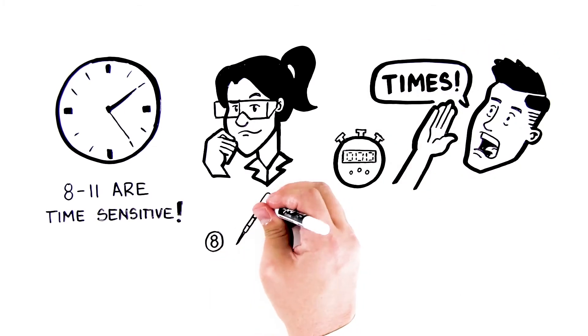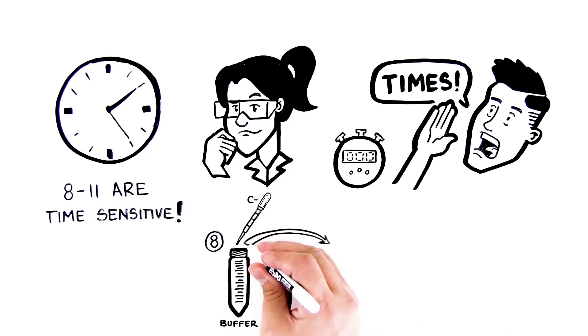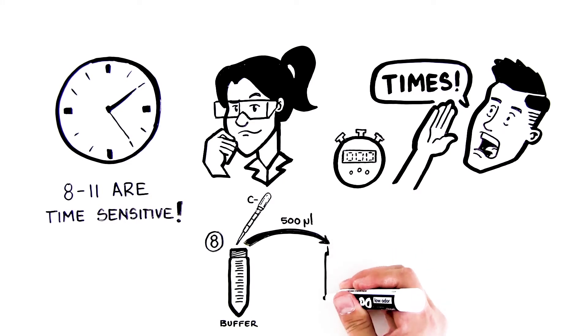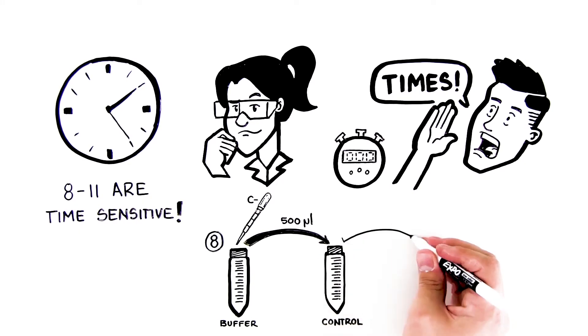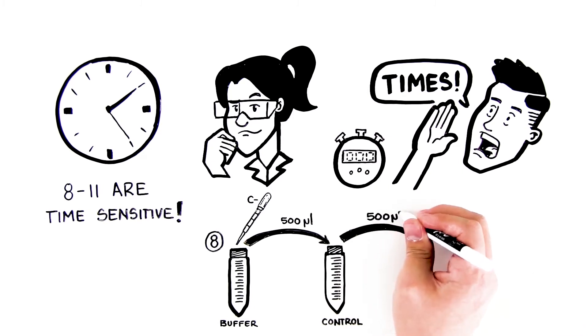Step 8: Using the DPTP labeled C, pipette 500 microliters of buffer into the 15ml conical tube labeled control and gently mix. Once you've mixed the buffer with the substrate, remove 500 microliters of this solution and add it to your cuvette labeled start.